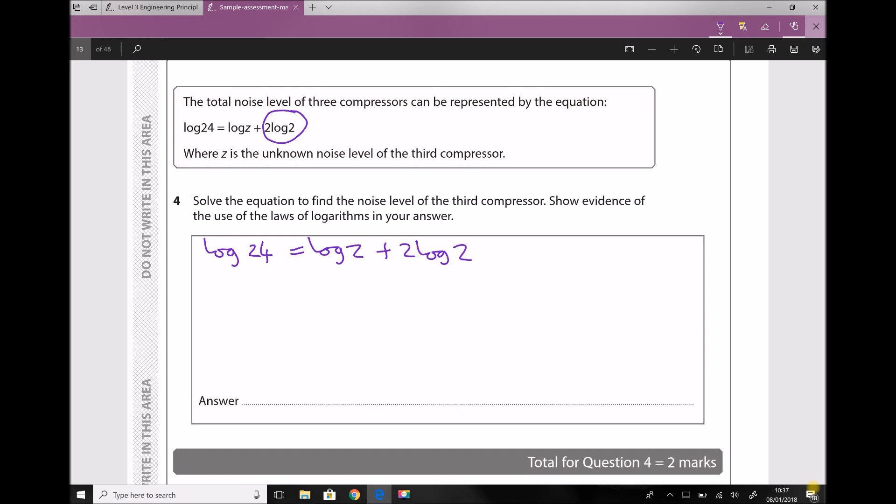But we've just said that n log a is the same as log a to the n. Therefore we can rewrite this to say that log 24 equals log z plus log 2 to the power 2, or log 2 squared. Well, 2 squared is just 4, so we can rewrite this yet again to state that log 24 is log z plus log 4.